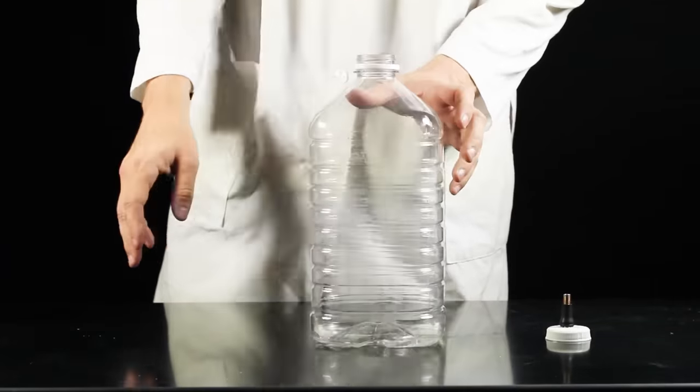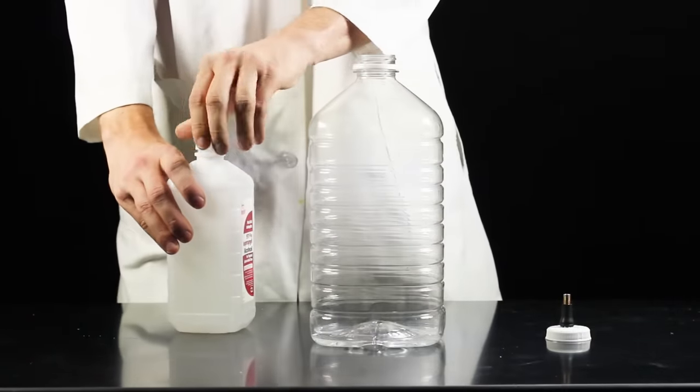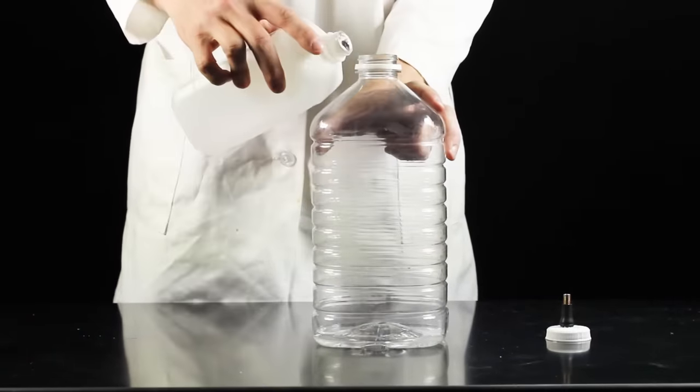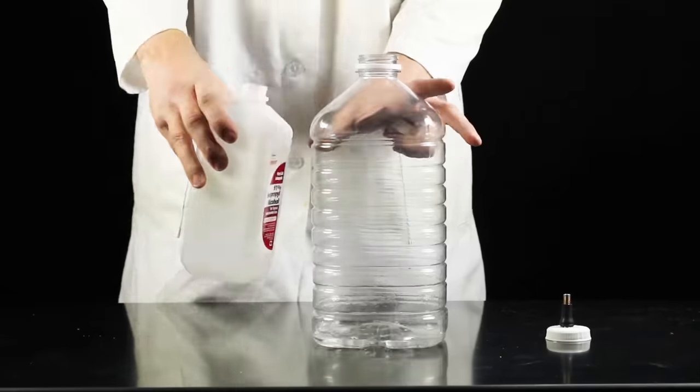Once the tire valve has been installed on the cap, take the empty bottle and add about one tablespoon of 91% isopropyl alcohol.